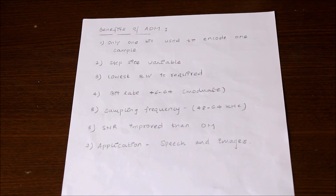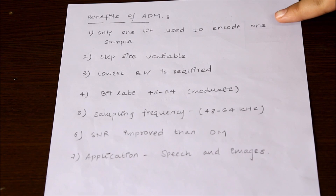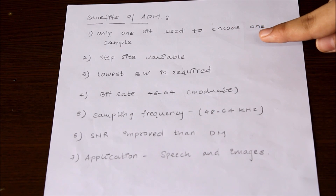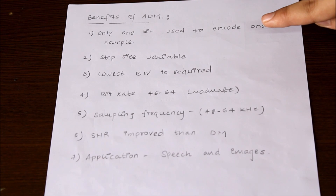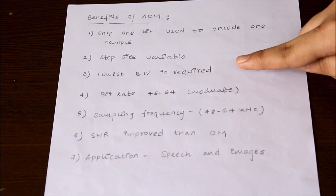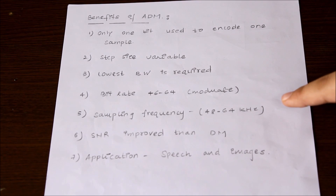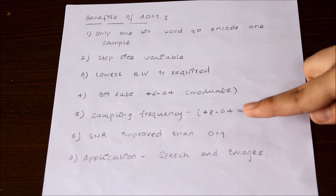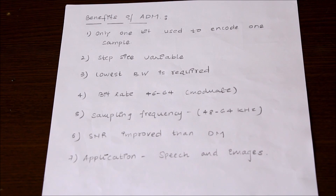After studying the ADM experiment, the benefits are: firstly, ADM uses only one bit to encode one sample, which reduces the bandwidth. The step size is variable, which helps track the signal without slope overload error or granular noise. Lowest bandwidth is required compared to DM, PCM, etc. The bit rate is moderate and the sampling frequency is variable between 48 to 64 kHz. Because the signal provides better tracking, the SNR is highly improved compared to DM. Applications for ADM are in speech and image processing. Thank you.